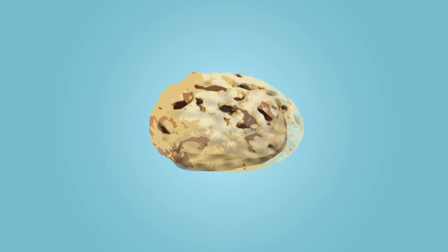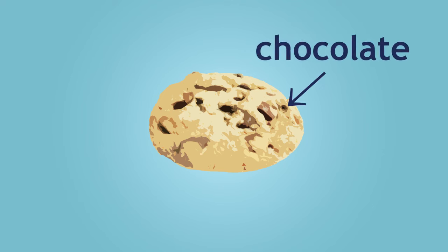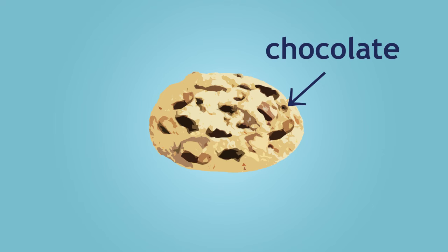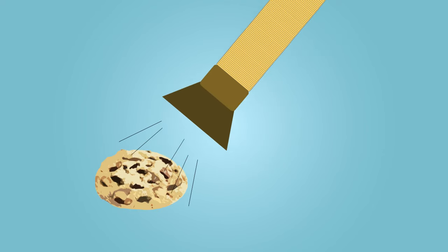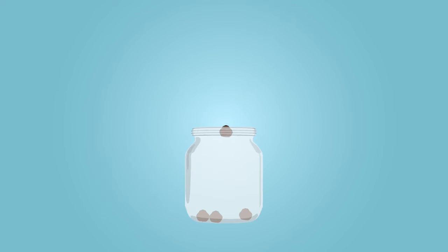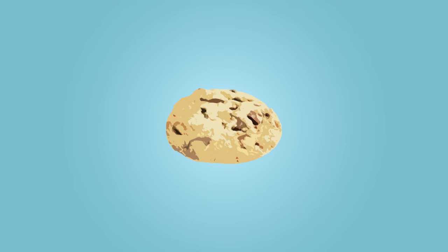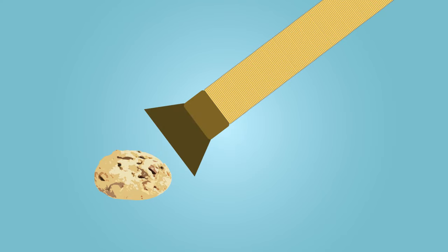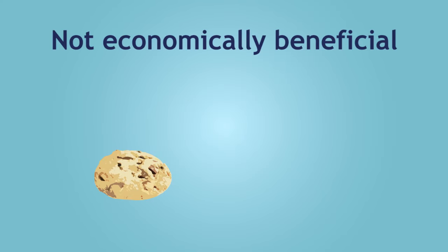We can think about an ore a bit like a chocolate chip cookie. We really want the chocolate. If there are more chocolate chips in the cookie, then the extraction process would be more economically beneficial, as more minerals, in this case, the chocolate, can be obtained. If there are fewer chocolate chips, then the extraction process may not be as economically beneficial.